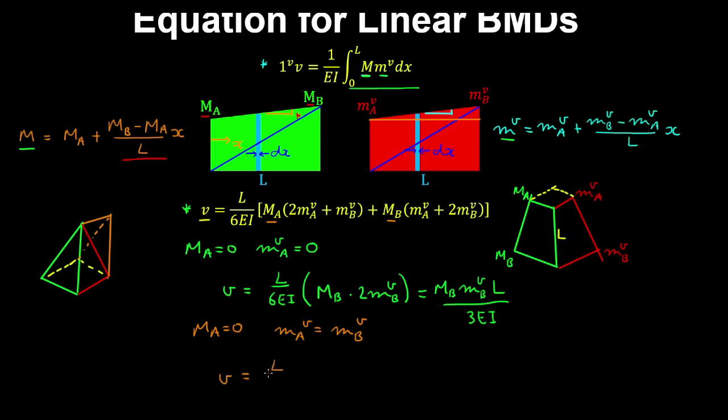And therefore, you obtain a deflection is equal to l on 6EI, mb, and that's multiplied by mbv, where we said mav equal to mbv, and then plus 2mbv. So that gives 3 on 6, and we obtain the real by the virtual by the length on 2EI.